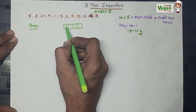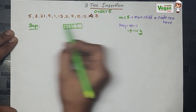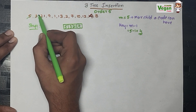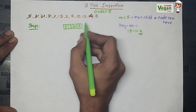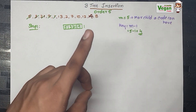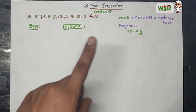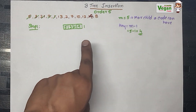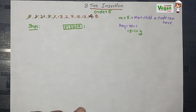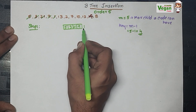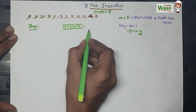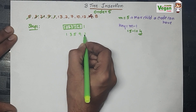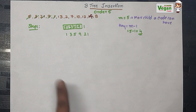The first value is 5, next is 3, next is 21, next is 9. Now I must insert 1. To insert 1 there is no space, because each node has a maximum of 4 key spaces. Now 1 is the fifth element. What I must do is arrange these elements in increasing order: 1, 3, 5, 9, and 21.